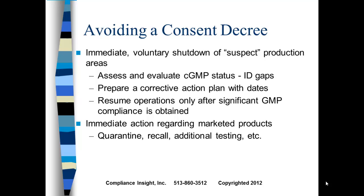Avoiding a consent decree: the best advice is don't get into the position of facing one. Work as feverishly as you can up front to be compliant. If you get 483s, fix them — no repeat observations. If you get warning letters, work with the FDA to fix those things quickly and effectively. An immediate voluntary shutdown of suspect product areas shows the FDA you are serious. Assess and evaluate your GMP status, identify the gaps, prepare a corrective action plan with dates, and resume operations only after significant GMP compliance is obtained.